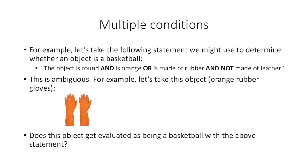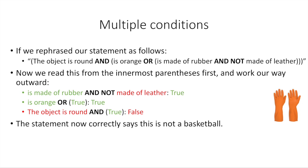Let's say we have a program and we want to determine whether an object is a basketball. We might describe it this way: the object is round AND it's orange OR it's made of rubber AND not made of leather. See, this is confusing — how do we read this? For example, let's take orange rubber gloves — does this object get evaluated as being a basketball with the above statement? Now let's rephrase this with some parentheses. The parentheses basically say do this first. If something is in parentheses, we're going to work from the inside out. We take the innermost parentheses first and then pop out to the next level further out and so on.